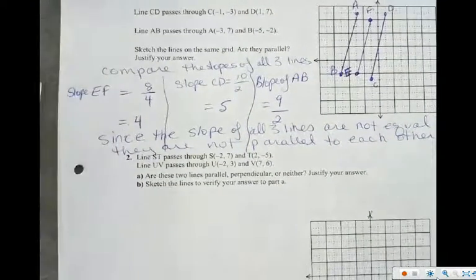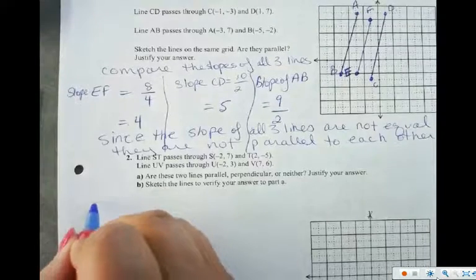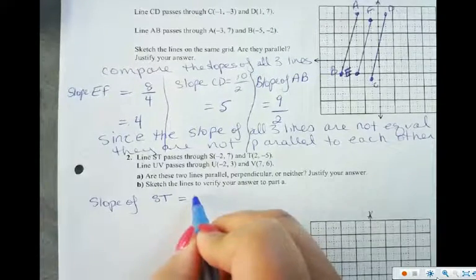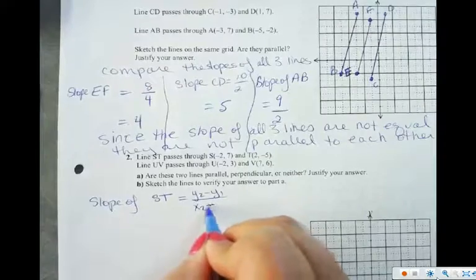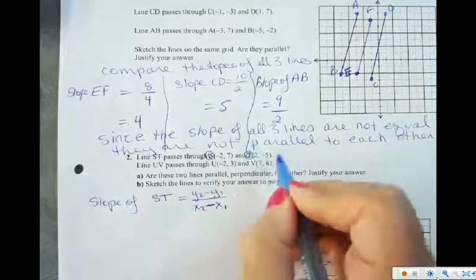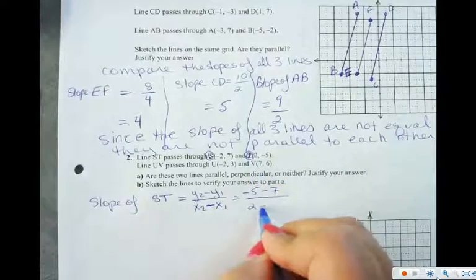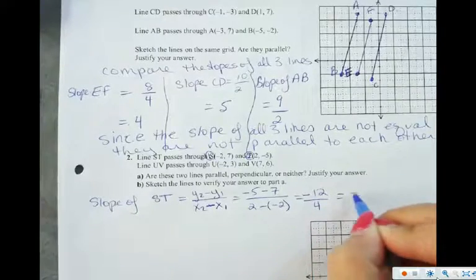Now let's look at lines ST and UV and see if they are parallel, perpendicular, or neither. Let's find the slope of line ST using Y2 minus Y1 over X2 minus X1. With the given points, I get negative 5 minus 7 over 2 minus negative 2, which is negative 12 over 4, giving a slope of negative 3.